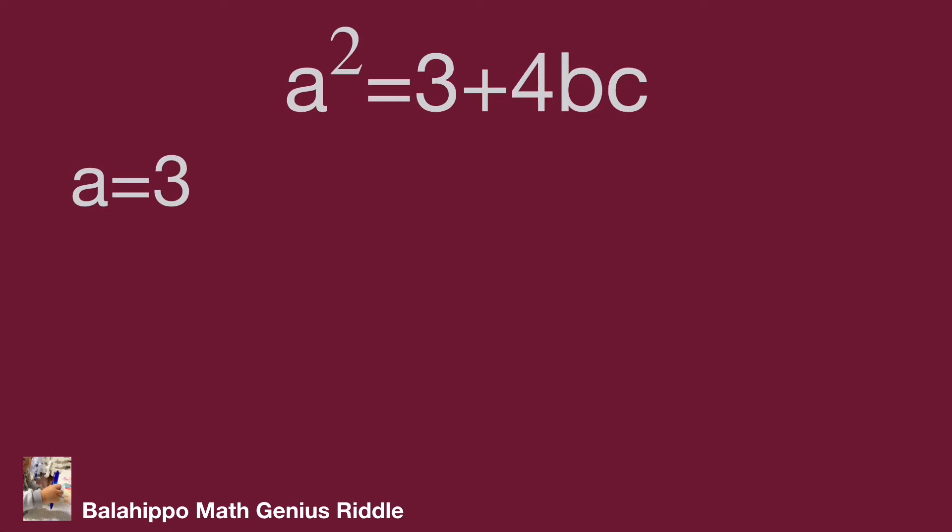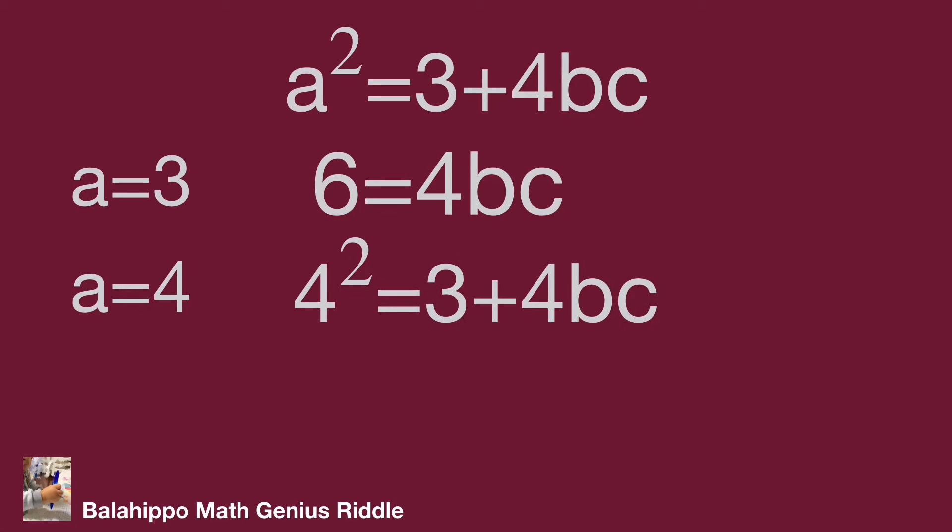Then the equation is 3 squared equals 3 plus 4bc. 3 squared equals 9. Simplifying this equation: 6 equals 4bc, which has no integer solution. Then a equals 4: 4 squared equals 3 plus 4bc. 4 squared equals 16. Simplifying: 13 equals 4bc. This is not a solution either.